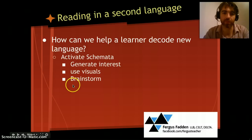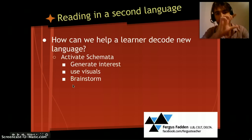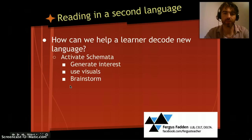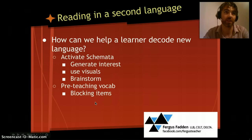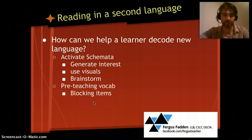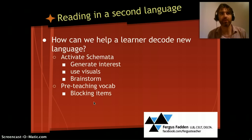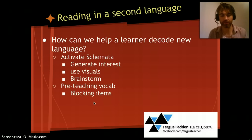Another technique is asking students to predict — for example, look at the headline of an article and predict what it will be about. We can also help students by pre-teaching vocabulary, principally blocking items. Blocking items are vocabulary that students at a given level — elementary, pre-intermediate, intermediate — won't be able to infer from context, and which will inhibit their path through the text. So we remove those blocking items by pre-teaching them.